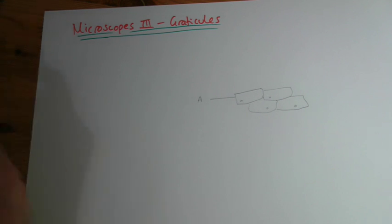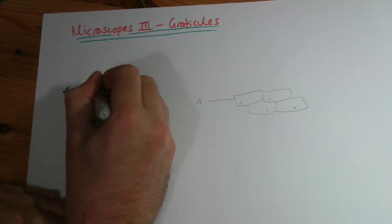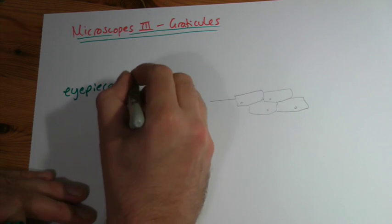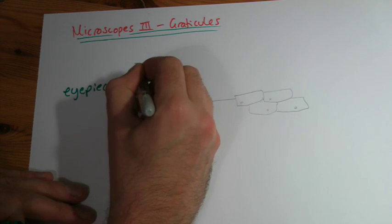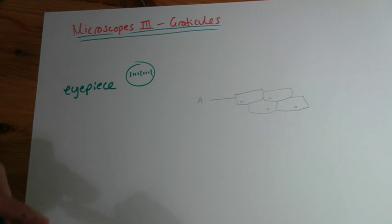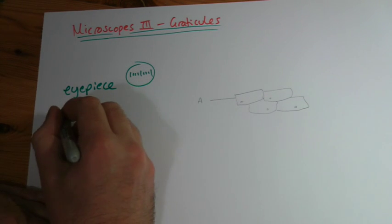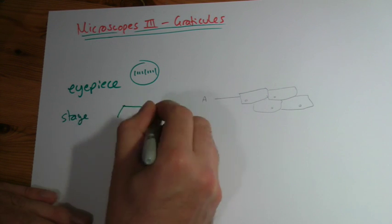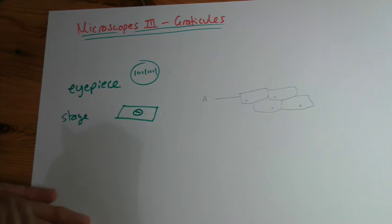They come in two flavours. One is the eyepiece graticule, and this is going to be the thing that you look down — so when you're looking at it, it's just going to be a series of lines, something like that. And then the stage graticule, which is the one that comes on a slide and will look something like that.